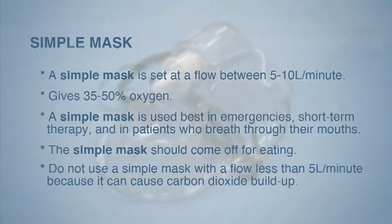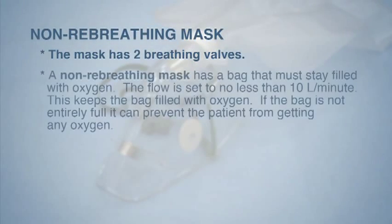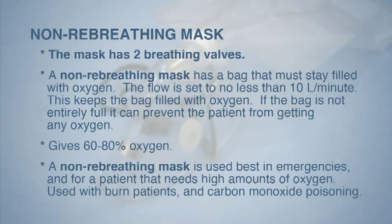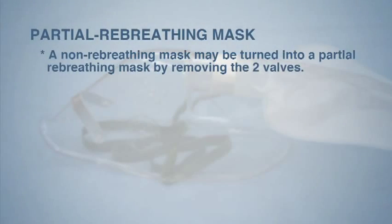The non-rebreathing mask has two breathing valves and a bag that must stay filled with oxygen. The flow is set no less than 10 liters per minute to keep the bag filled. If the bag is not entirely full, it can prevent the patient from getting any oxygen. It gives 60 to 80 percent oxygen and is used best in emergencies for patients that need high amounts of oxygen, including burn patients and carbon monoxide poisoning. A non-rebreathing mask may be turned into a partial-rebreathing mask by removing the two valves.